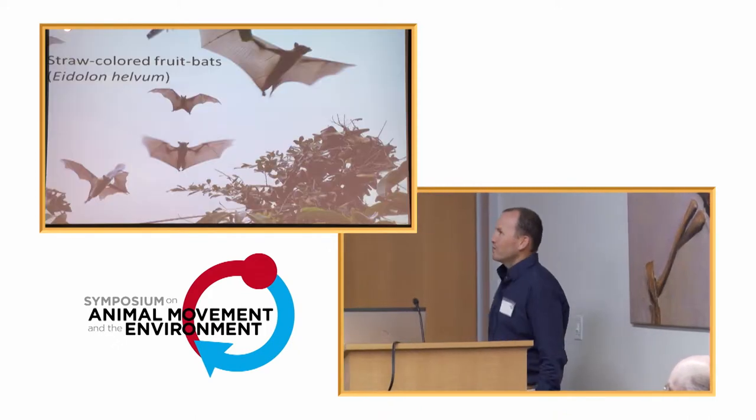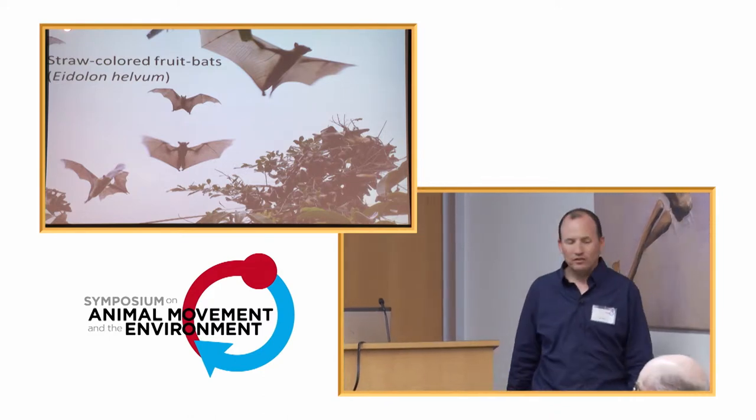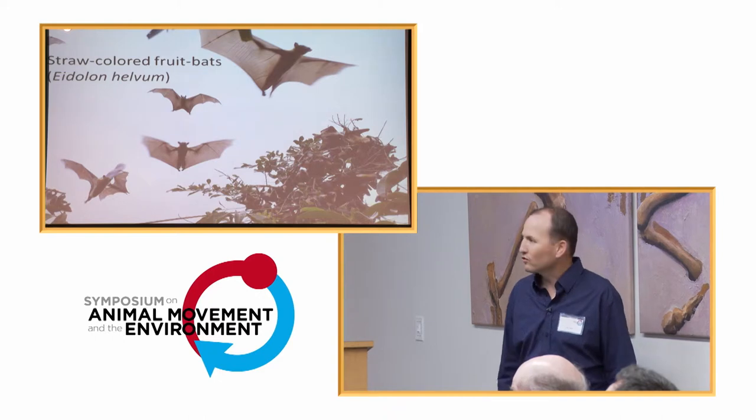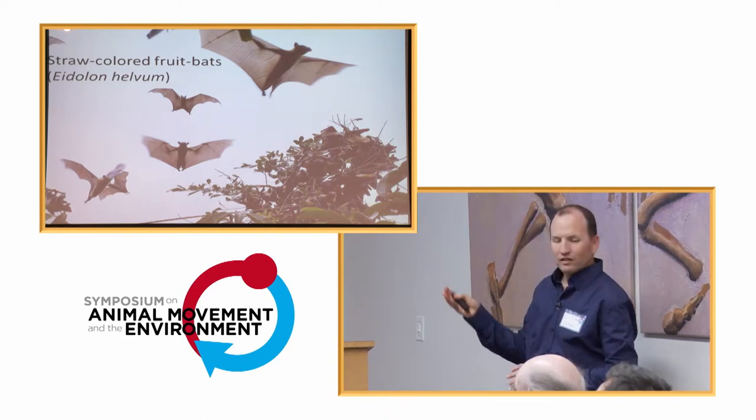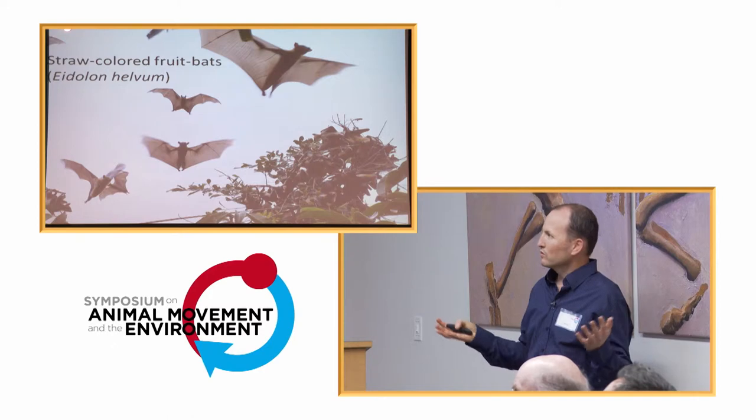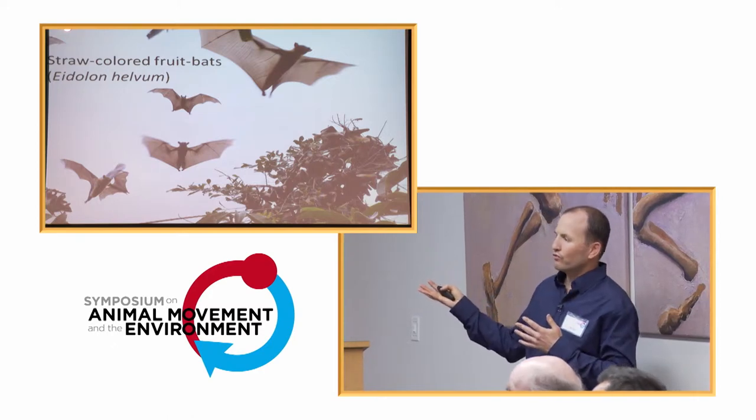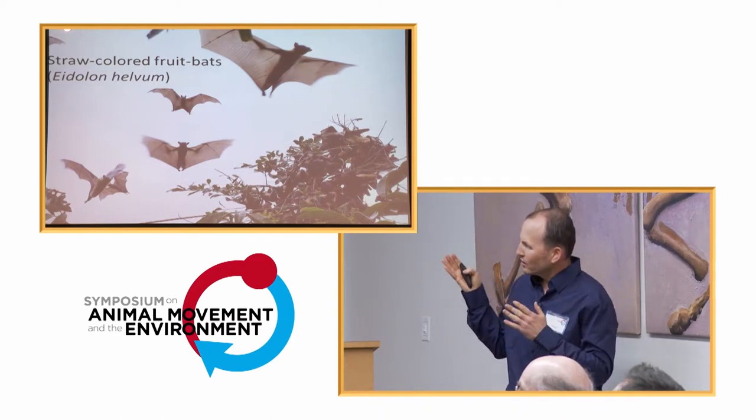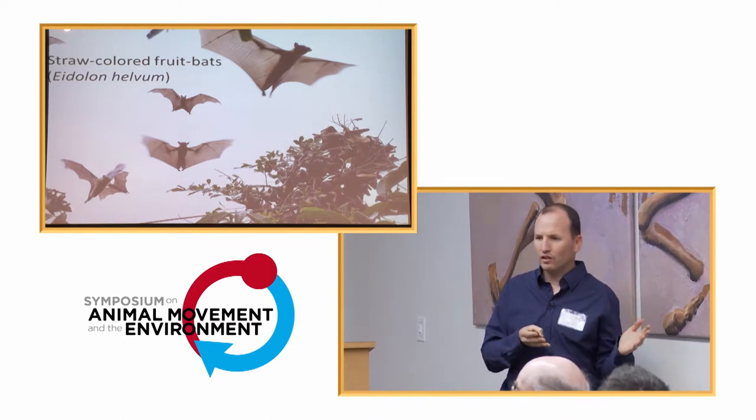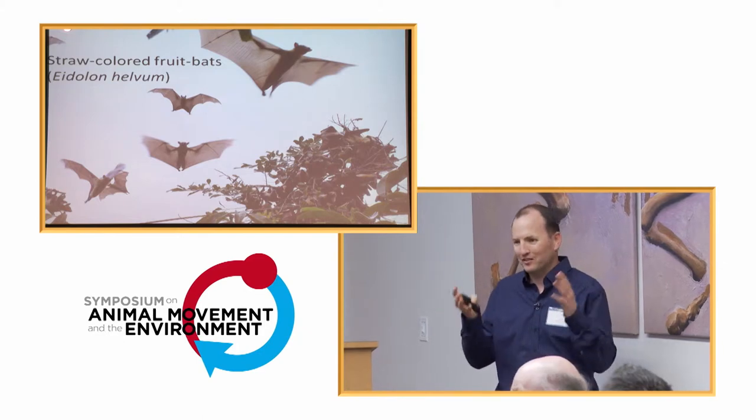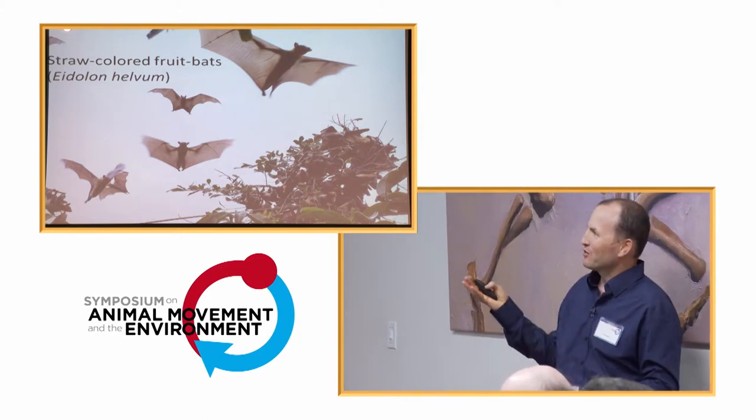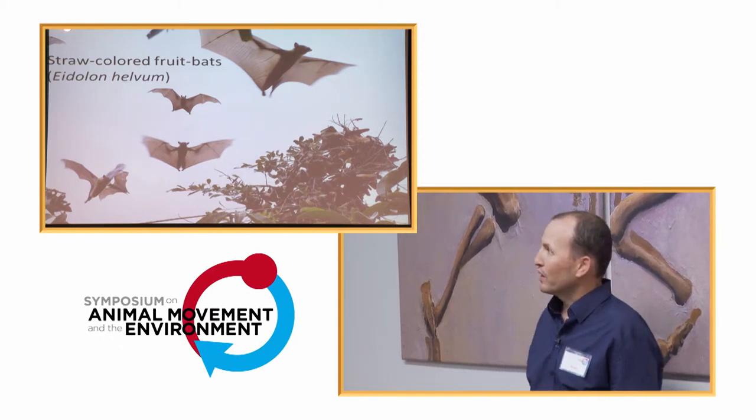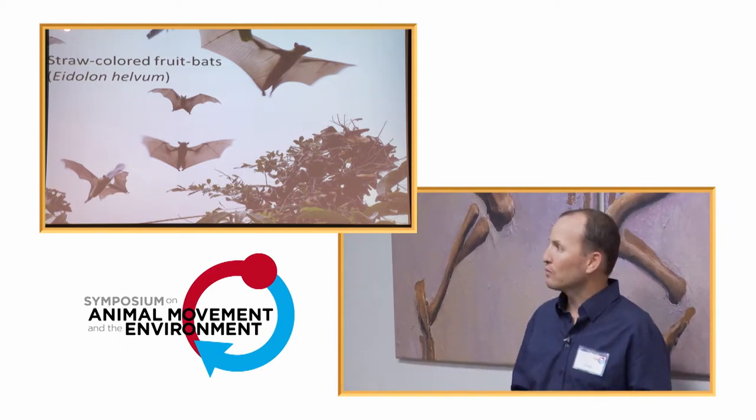So I'm happy to introduce the straw-colored fruit bat. It is, I think, a wonderful creature. It lives in very large roosts. So the particular roost that we followed was, I think, 100,000 individuals, but they get up to 10 million, I think. Martin, you're welcome to correct me.